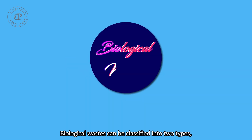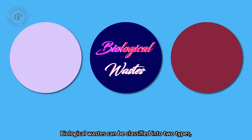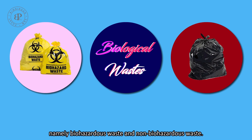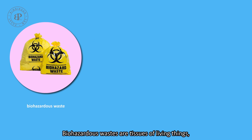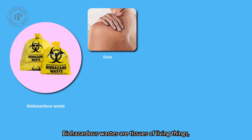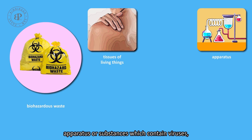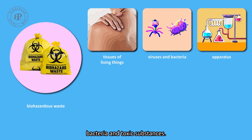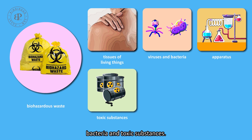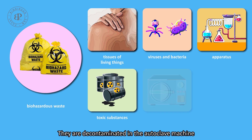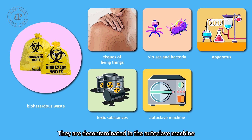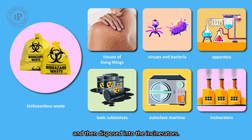Biological waste can be classified into two types: biohazardous waste and non-biohazardous waste. Biohazardous waste are tissues of living things, apparatus or substances which contain viruses, bacteria and toxic substances. They are decontaminated in the autoclave machine and then disposed into the incinerators.